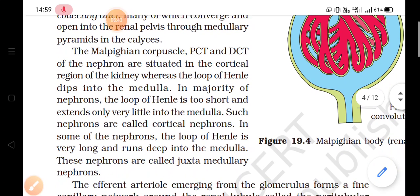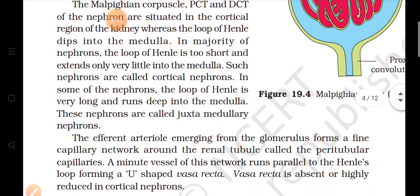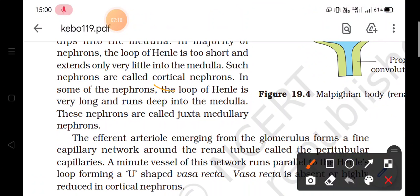In some nephrons the Loop of Henle is very short and extends only a little into the medulla — these are called cortical nephrons. In other nephrons the Loop of Henle is very long and runs deep into the medulla — these are called juxtamedullary nephrons. So cortical nephrons have a short loop and juxtamedullary nephrons have a long loop.